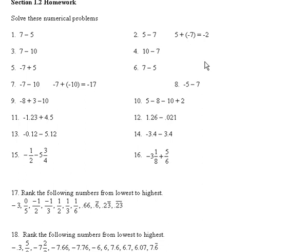The same thing happens with problem 8. We have negative 5 minus 7 — subtracting off 7 — and negative 5 minus 7 would give us negative 12. The signs are the same, so add them and bring along the sign: negative 12.